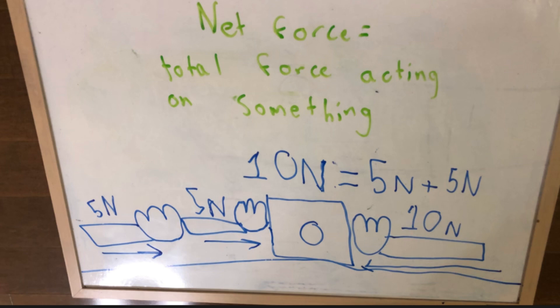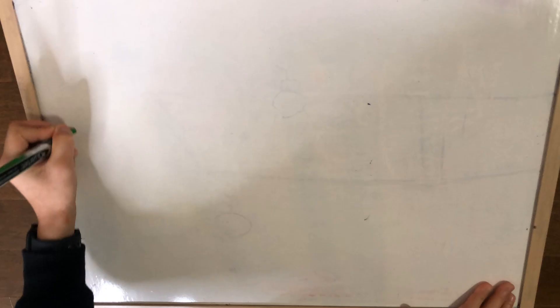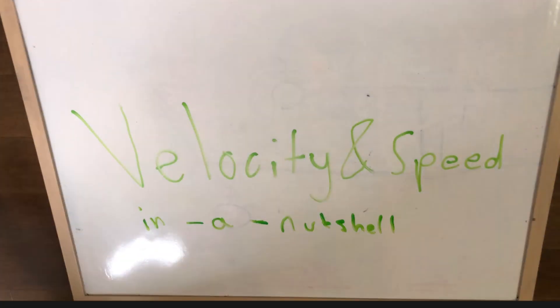And now, the net force on the box is now 0, since they both cancel out. And that is velocity and speed in a nutshell.